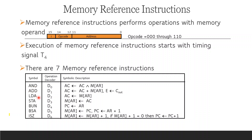The seven memory reference instructions are: AND (to AC), ADD (to AC), LDA — Load Accumulator, STA — Store Accumulator, BUN — Branch Unconditionally, BSA — Branch and Save Return Address, and ISZ — Increment and Skip if Zero. The operation decoder maps each opcode to a decode signal D0 through D6.